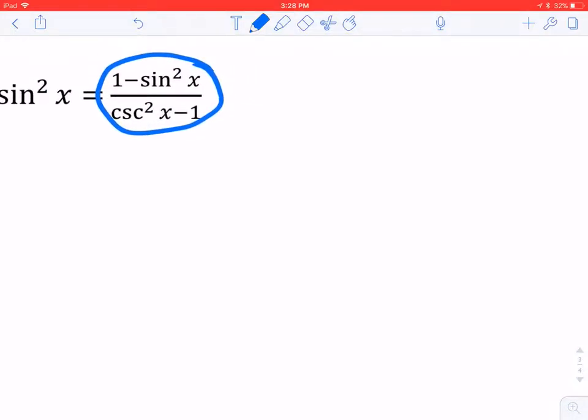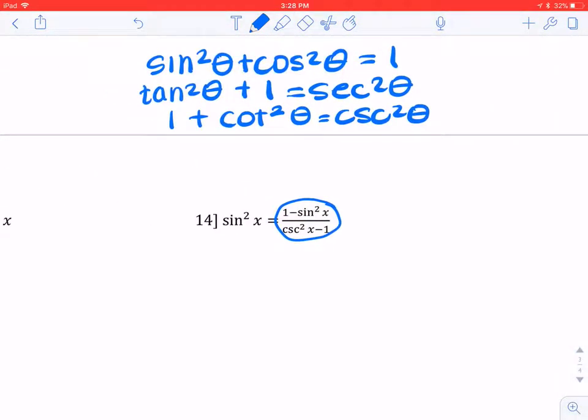I'm going to look at my three Pythagorean identities and look to see if there's anything I can substitute. If I look at the numerator of this fraction, there's a 1 minus sine squared. So if I look at my first trig identity, I have a cosine squared, a sine squared, and a 1.